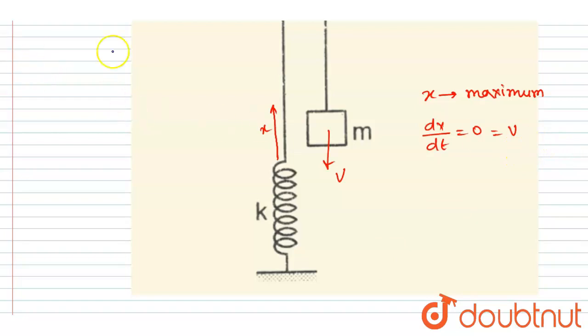So what will happen at the final position? The spring will be extended like this and the block will be at this position. Since the spring got extended by x, the block will move downward by x, and the block will have a velocity zero, and initially it was also having zero velocity.